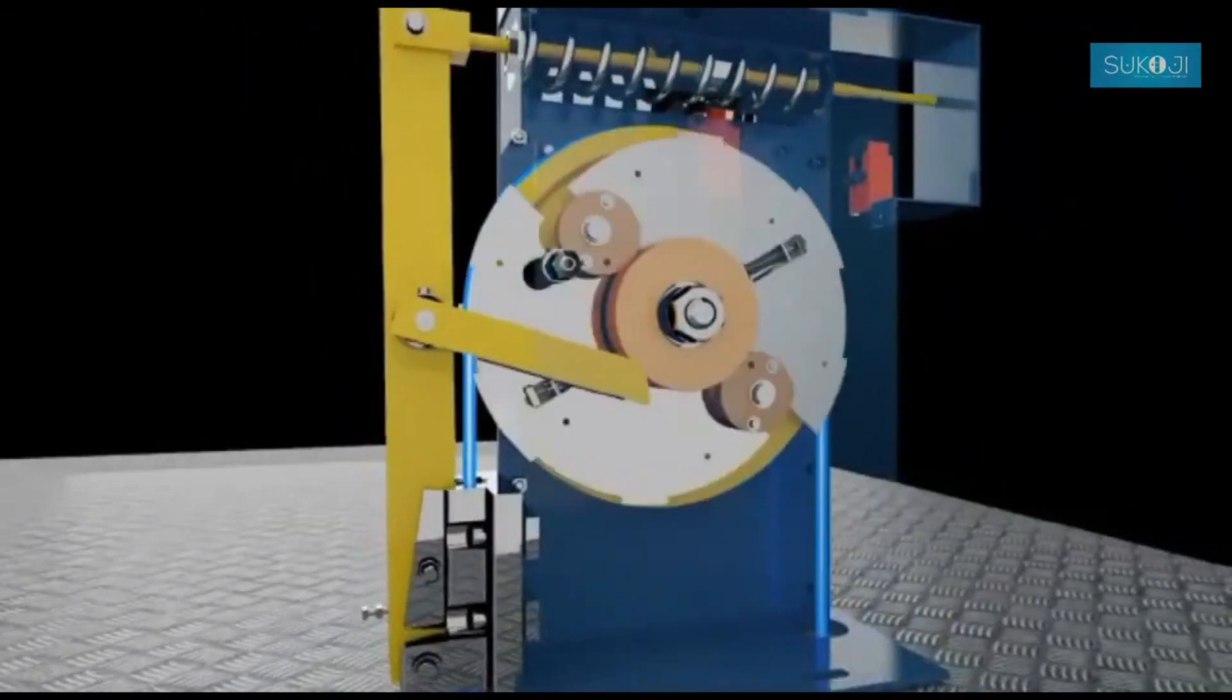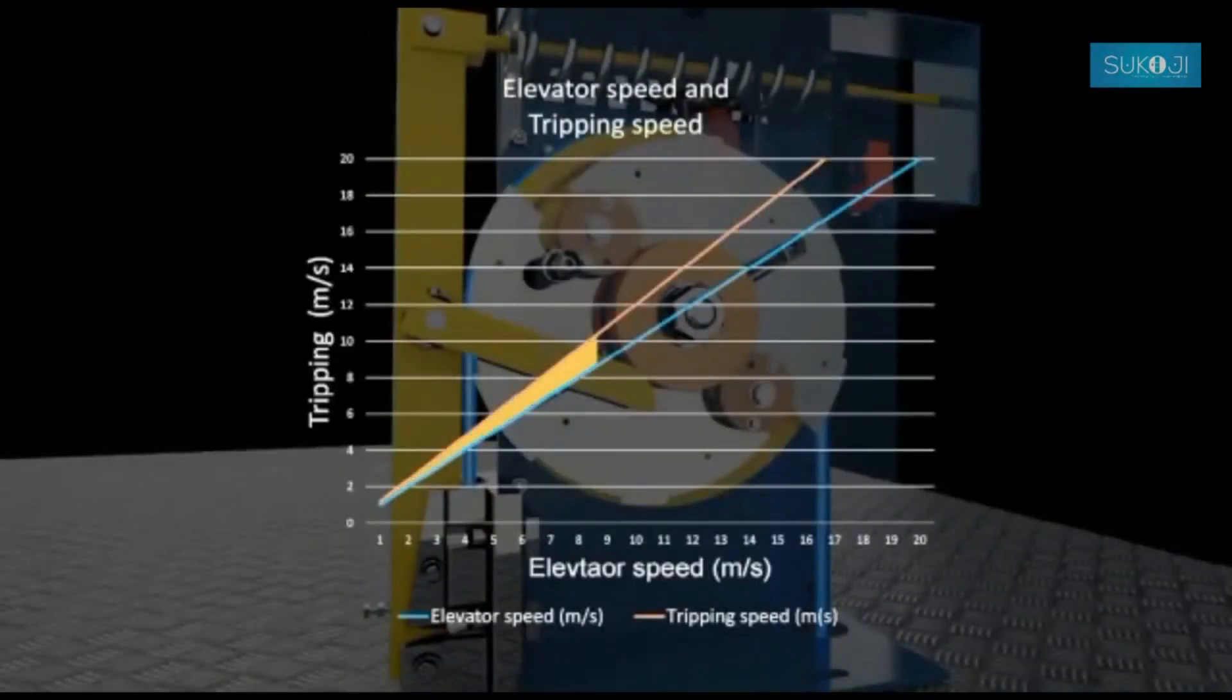As the name suggests, this device gets activated in case the elevator starts running 0.15 to 0.20 times higher than the rated speed in an upward or downward direction.